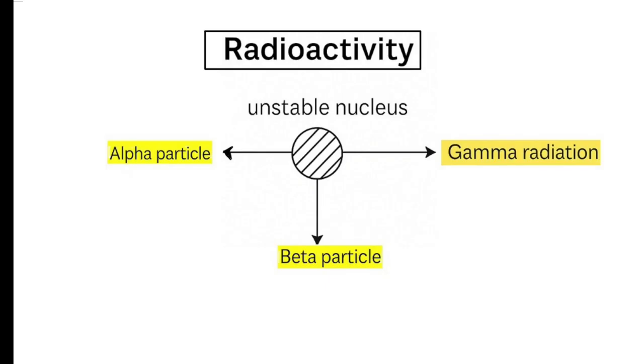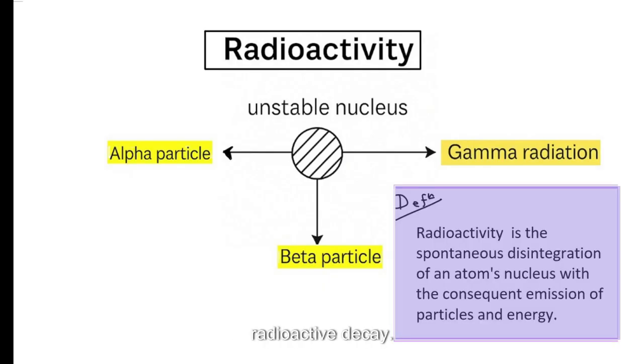Some atoms are unstable, so they randomly throw out radiation to become more stable and this is what we call radioactive decay.